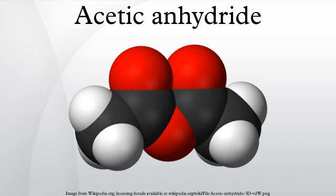Acetic anhydride, or ethanoic anhydride, is the chemical compound with the formula (CH3CO)2O. Commonly abbreviated Ac2O, it is the simplest isolatable acid anhydride and is a widely used reagent in organic synthesis. It is a colorless liquid that smells strongly of acetic acid, formed by its reaction with the moisture in the air.